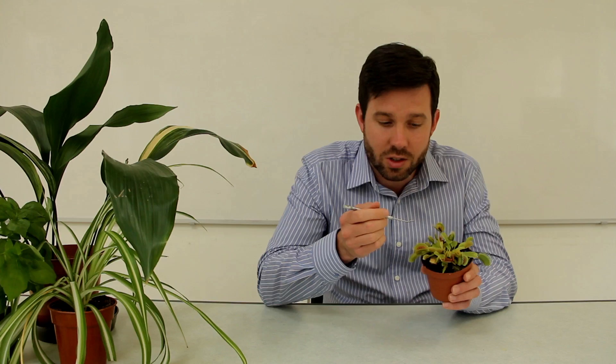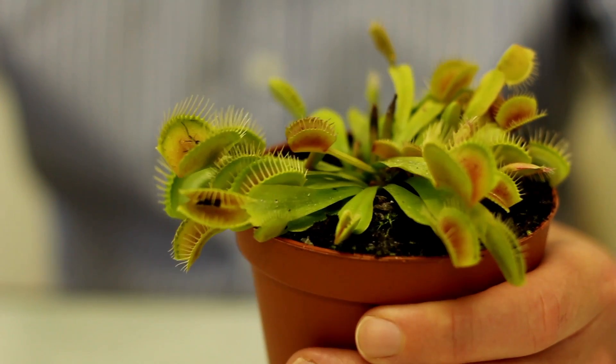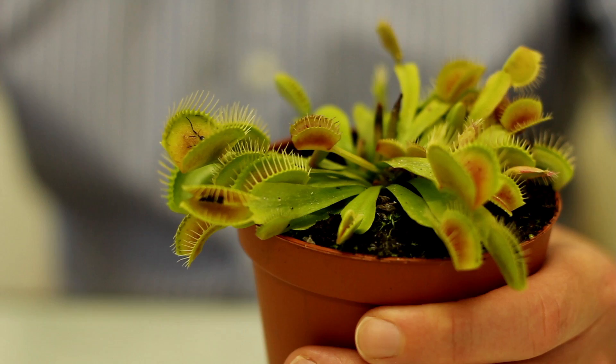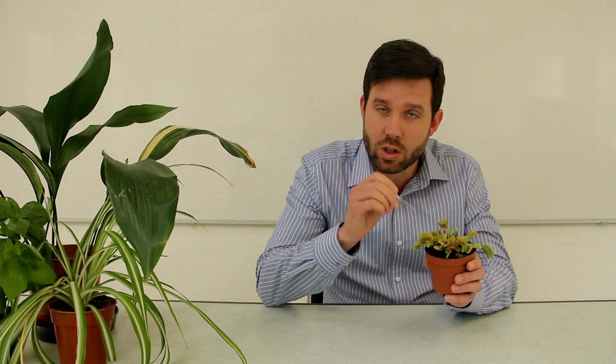As you can probably see, there are hairs around the outside of the traps, and these aren't actually the triggers that cause the trap to close. There are much smaller hairs on the inside of the trap, and what you can get your students to do is work out by using forceps or a pencil which hairs cause the trap to close.